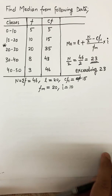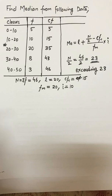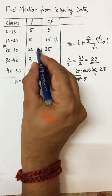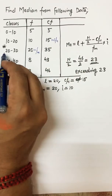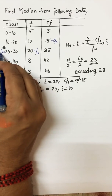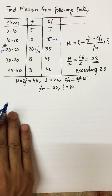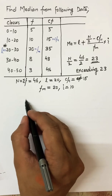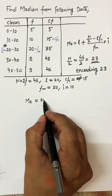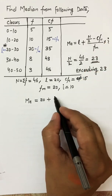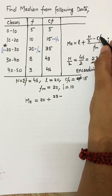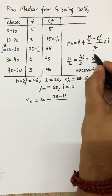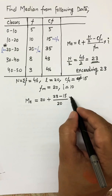For convenience, I will also write the terminology against each value: 15 is the cumulative frequency of the previous class, 20 is the frequency of the median class, 20 is the lower class limit L, and 10 is the class width. Now plugging into the formula: median equals L which is 20, plus N by 2 (23) minus CF of previous class (15), divided by FM (20), times I (10).